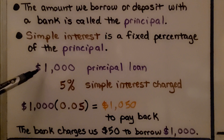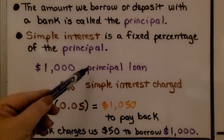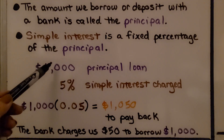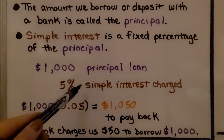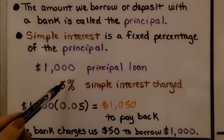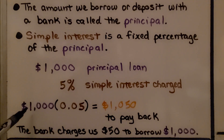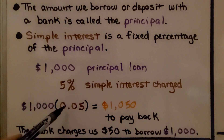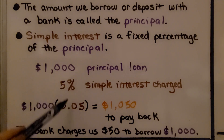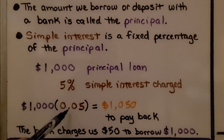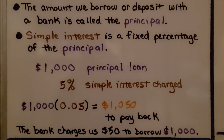If we borrow $1,000, the principal of the loan is $1,000. If the simple interest being charged is 5%, we multiply the $1,000 principal by the interest written as a decimal, 0.05 for 5%, and we have $1,050 to pay back. The bank charges us $50 to borrow $1,000.